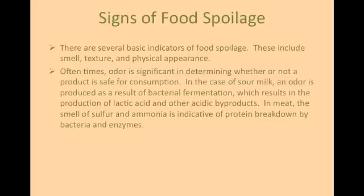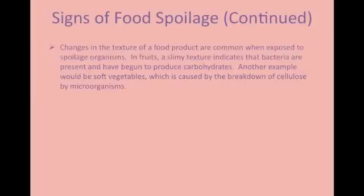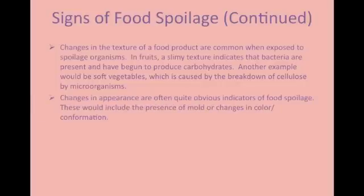In meat, the smell of sulfur and ammonia is indicative of a protein breakdown by bacteria and enzymes. Changes in the texture of a food product are common when exposed to spoilage microorganisms. In fruits, a slimy texture indicates that bacteria are present and have begun to produce carbohydrates. Another example would be soft vegetables, caused by the breakdown of cellulose by microorganisms. Changes in appearance are often quite obvious indicators of food spoilage, including the presence of mold or changes in color or conformation.